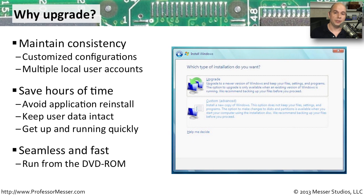You take your installation media, usually on a DVD-ROM — maybe it's an ISO file that you downloaded directly from Microsoft — you run that, and it automatically finds all of the information on your computer and upgrades you to the latest version.